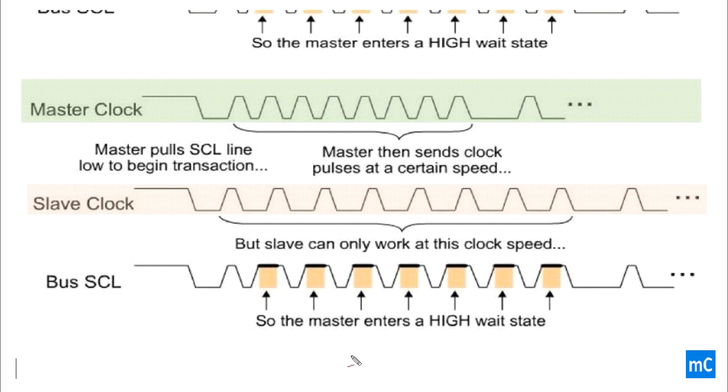So, in these cases, the wrong data or the previous ADC data can be read by the master. To avoid these kind of problems, the slave will pull the line low.